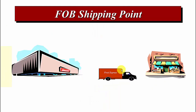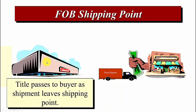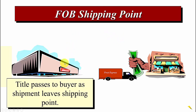When you sell goods to a customer and ship them FOB shipping point, whatever comes after the words FOB determines when title passes to the customer. FOB shipping point means title passes to the buyer as soon as the shipment leaves the shipping point — as soon as they leave your dock. These are no longer your goods once they leave.